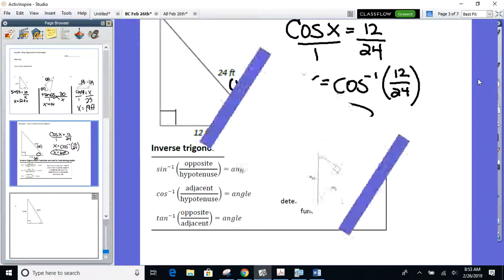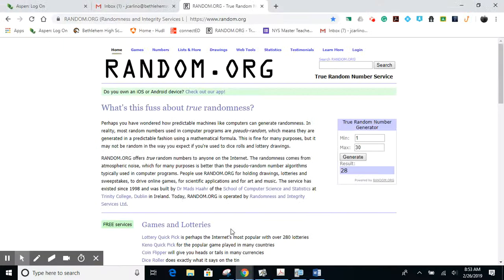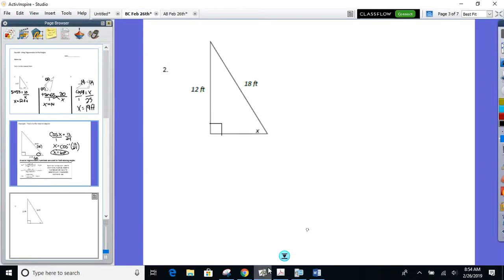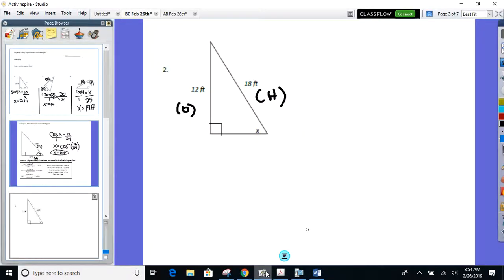One doesn't make you great, as we know. Let's try out a couple more. Number two, finding X. Same thing, identify, set up your equation just like you've been going. Here we go, 21. What's the 12? Opposite, and what's the 18? So it looks like I'm going to use which ratio for this one? Sine. Sine of X equals 12 over 18.